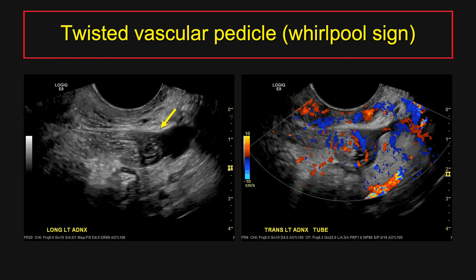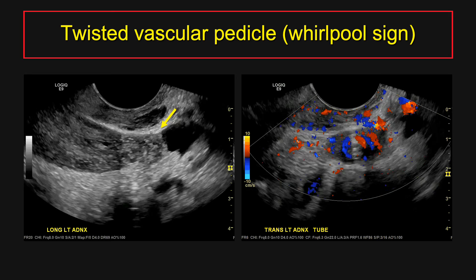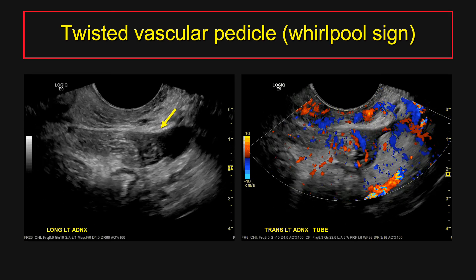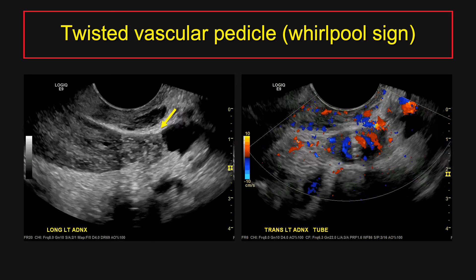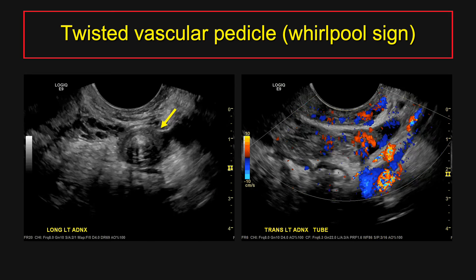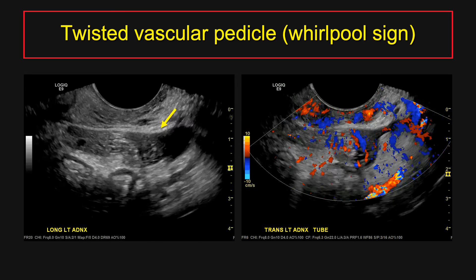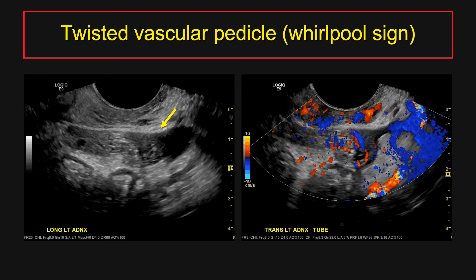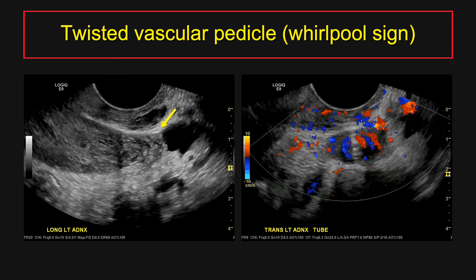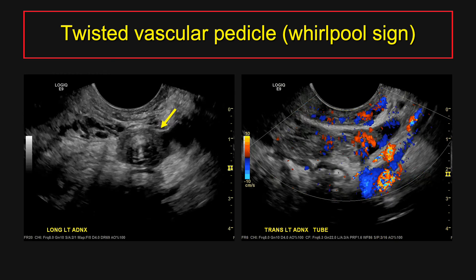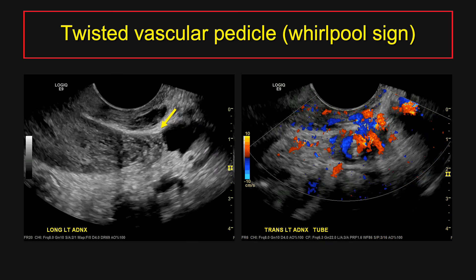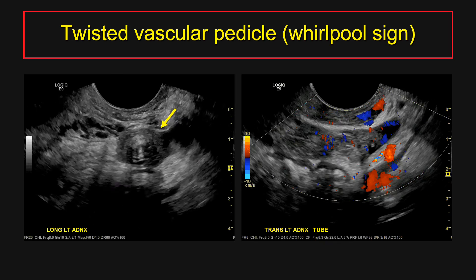Here's another case of the whirlpool sign in a 20-year-old woman with surgically proven ovarian torsion. On the grayscale cine image you can see twisting of the pedicle, and with color Doppler you can see the direction of flow around this pedicle.